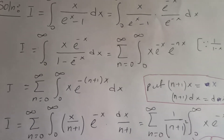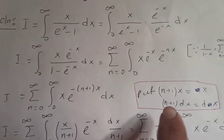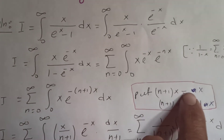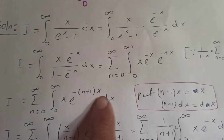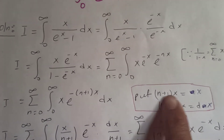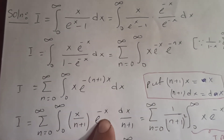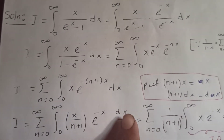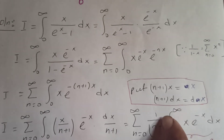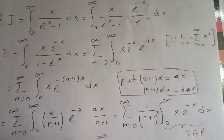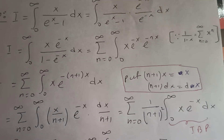So substituting, x over (n+1) replaces x, and e^(−x) uses the new variable. Then dx becomes du over (n+1). Since (n+1) is not involved in the integration with respect to u, it is a constant and comes out.